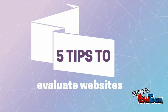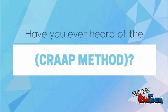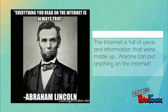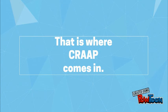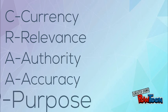Today we're going to be looking at a tutorial on the five tips to evaluate a website, and we're going to be focusing on the CRAP method. Have you ever heard of it? The internet is full of information and ideas that were made up — anybody can put anything on the internet, and you've got to find what you can trust. That's where the CRAP method comes in. It's an acronym we're going to use to help us.